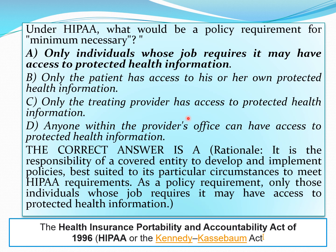Option C is only the treating provider has access to protected health information. Option D is anyone within the provider office can have access to protected health information. The correct option is A — only individuals whose job requires it may have access to protected health information. It is the responsibility of a covered entity to develop and implement policies best suited to its particular circumstance to meet the HIPAA requirements.